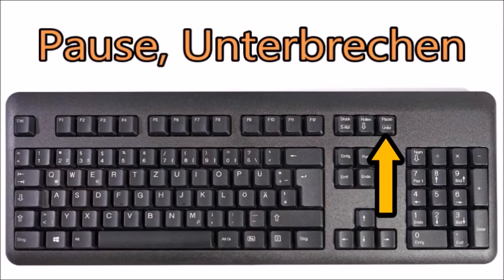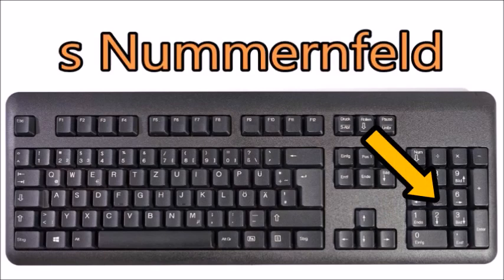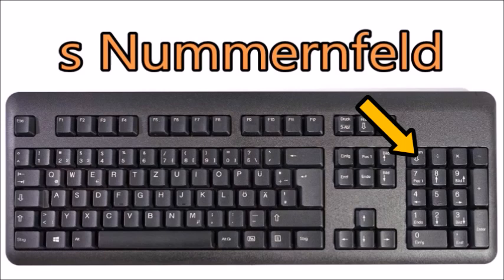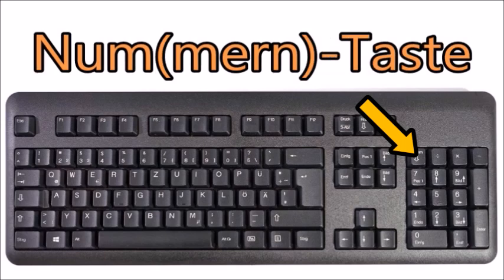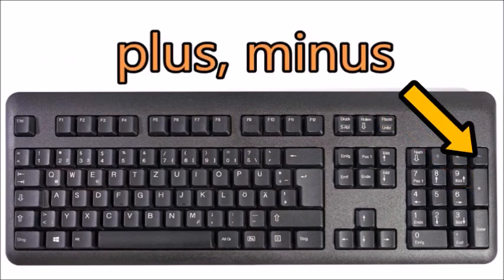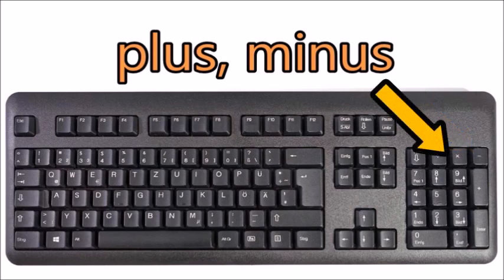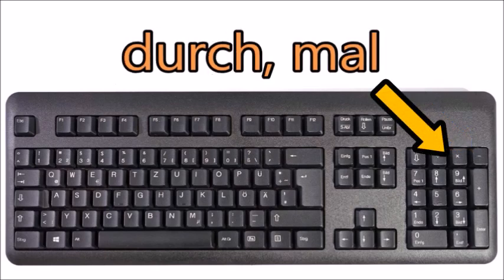Then there is Pause and Break, which is Pause and Unterbrechen. If you have a number pad — called das Nummernfeld — you can activate it with the Num key, called Numm-Taste or Nummern-Taste. On the pad there are plus, minus, divide, and multiply, which are called durch and mal.